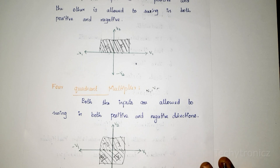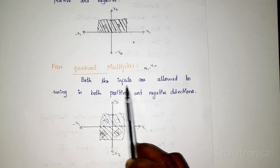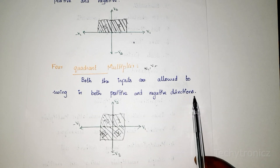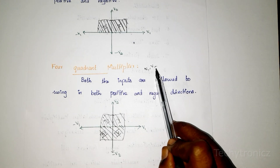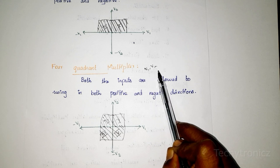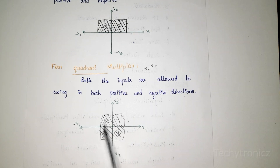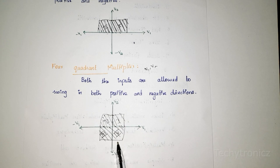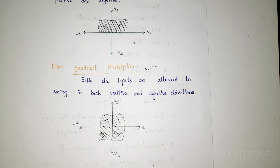The third type is the four quadrant multiplier. Here both inputs V1 and V2 are allowed to swing in both positive and negative directions, giving a graph covering all four quadrants. The mode of operation depends upon the polarity of the input signal.